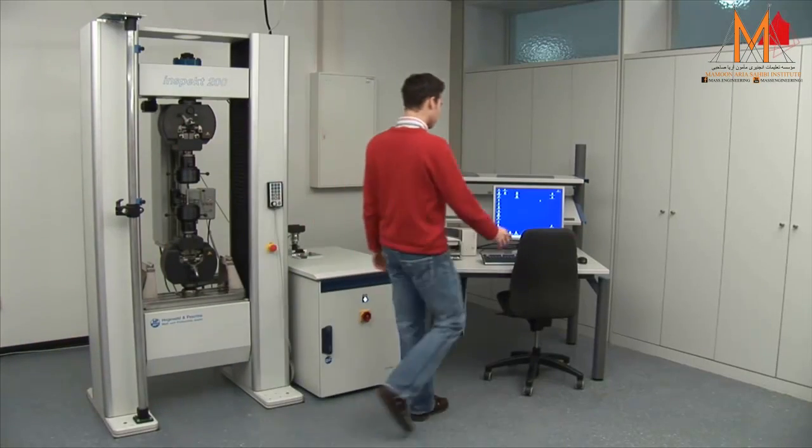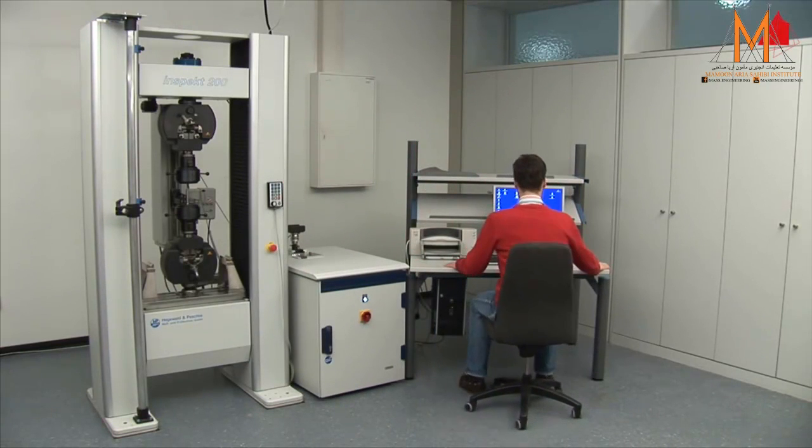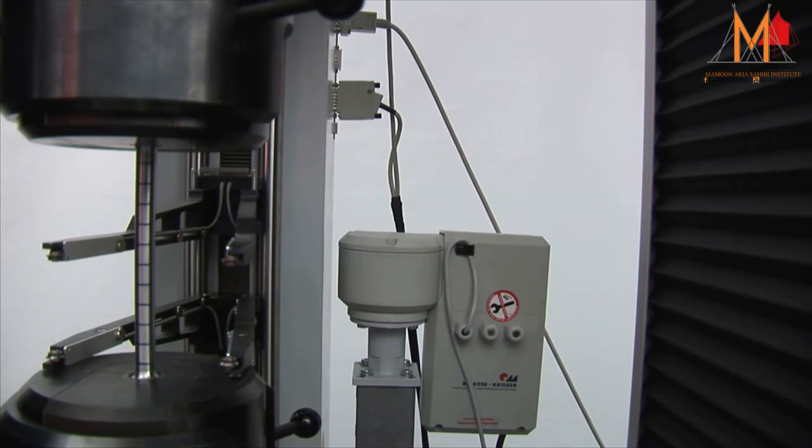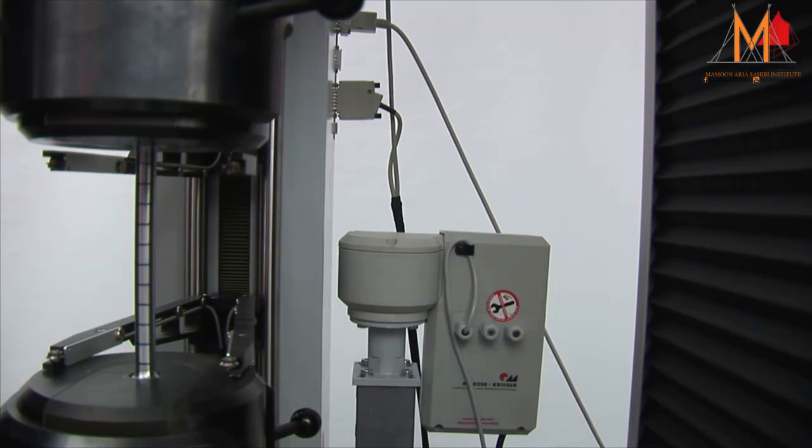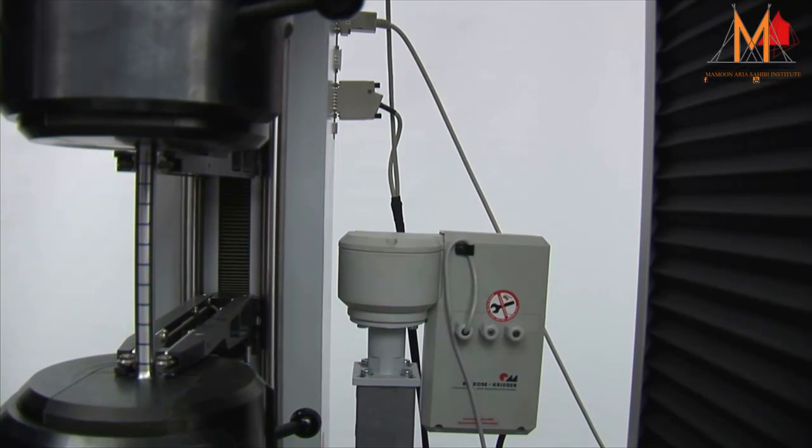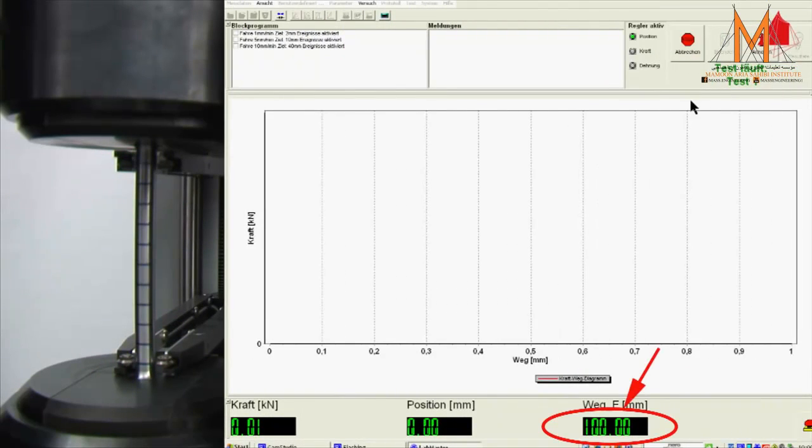Then he selects all necessary testing parameters on the control computer. Ready. The test starts and the extensometer's sensor arms are carefully pressed onto the test piece. This way, the gauge length can be measured throughout the whole tensile test. The gauge length is displayed at the bottom right-hand corner of the screen. At the beginning, it amounts to 100 millimeters.